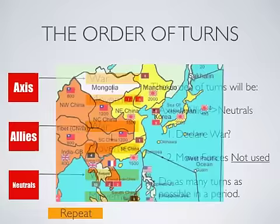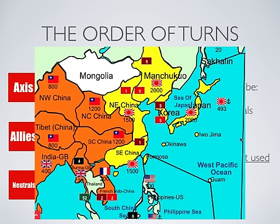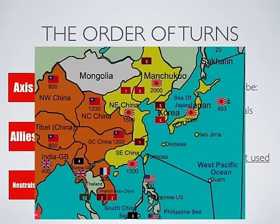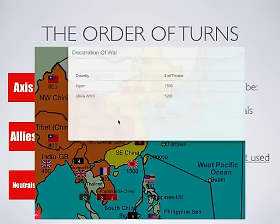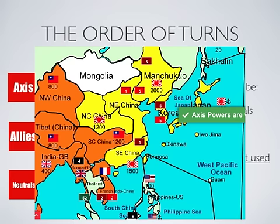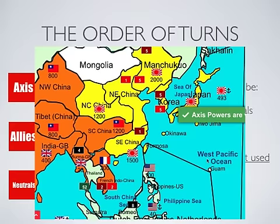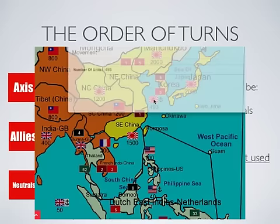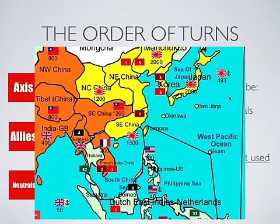Here is an example turn. In this example turn, we're going to give you a brief viewing of what a turn kind of looks like for a country. So let's say that Japan is going to attack North Central China in the war phase. They move 1,500 troops into North Central China, and then we have that battle, and the Axis powers are victorious. So we're going to go into movement, and Japan now wants to move 400 troops with their navy. I'm going to move my navy over here and split off 400.